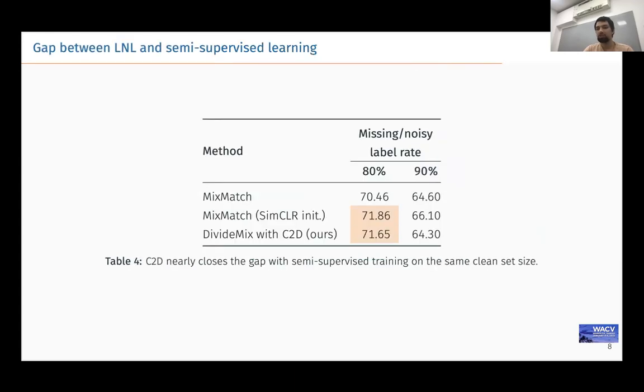As an upper bound for learning with noisy labels performance, we can use semi-supervised learning, when all noisy labels are removed, leaving us with partially labeled dataset. From this table, you can see that C2D closes the gap between learning with noisy labels and semi-supervised learning for its lowest 20% clean or labeled data. For 10% clean data, the gap is just 2% top-1 accuracy.